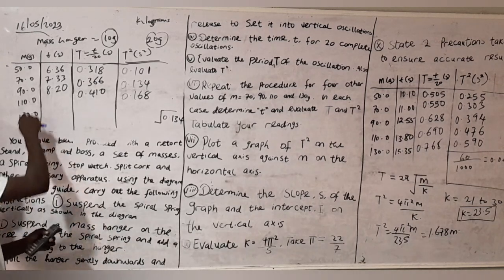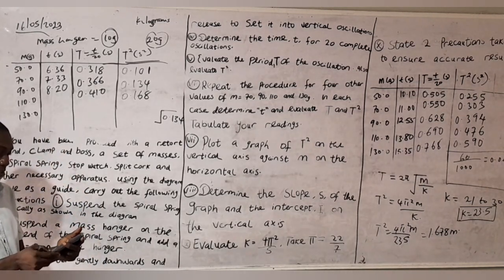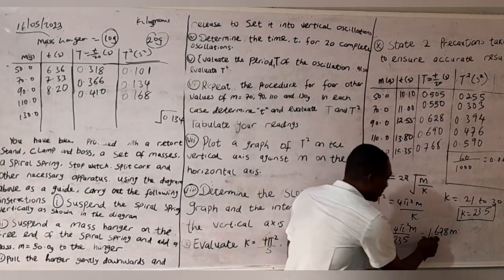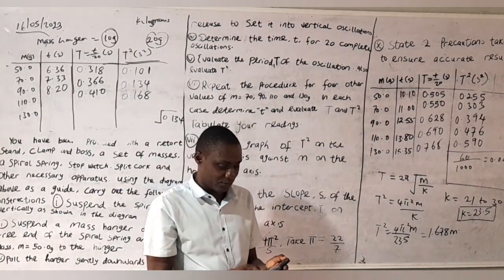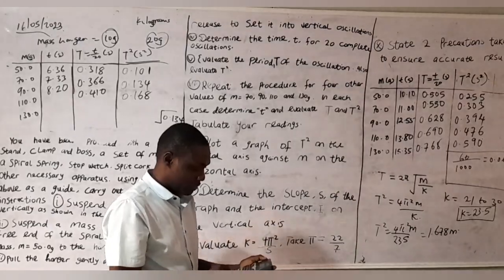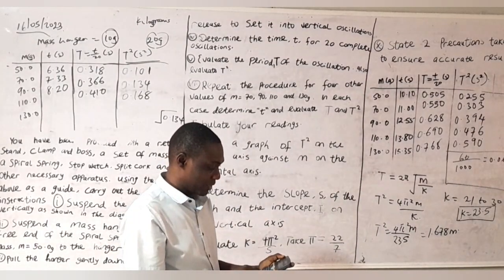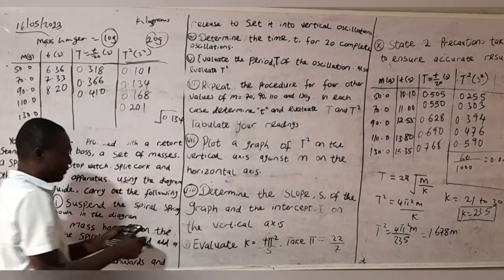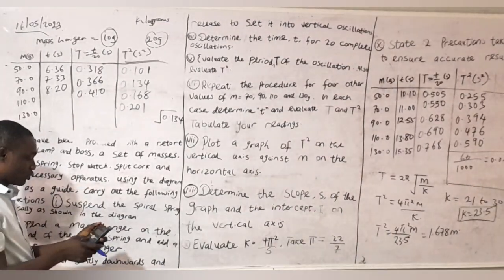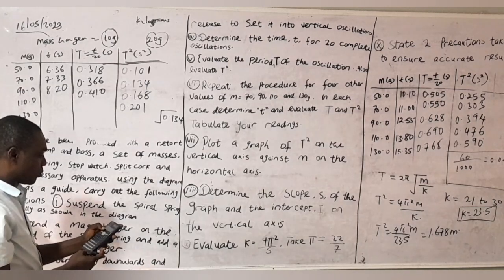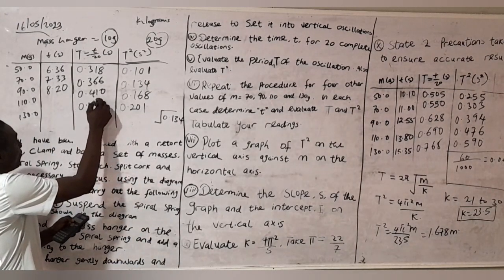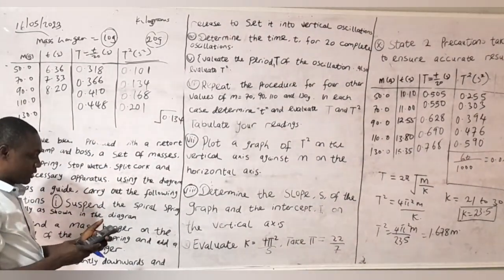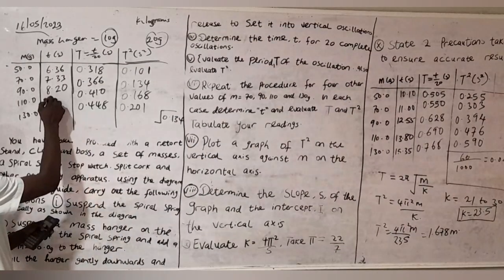Then I'll do it for 110 again. I'll add 10 to 110, that gives me 120. 120 divided by 1000 gives me 0.12. 0.12 times 1.678 gives me 0.201. I'll take the square root of 0.201, which gives me 0.448. I'll multiply this by 20 to get T, which is 8.96.